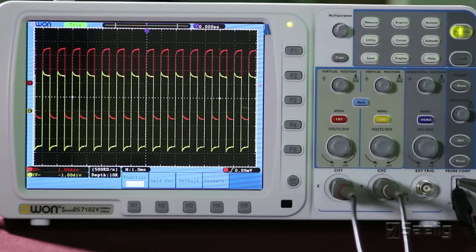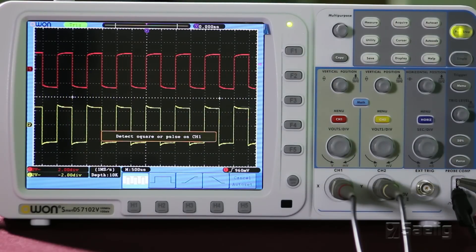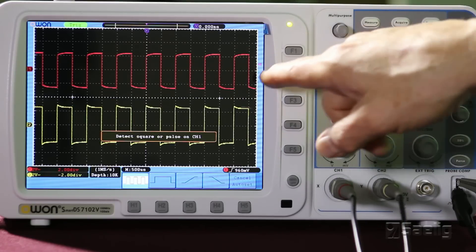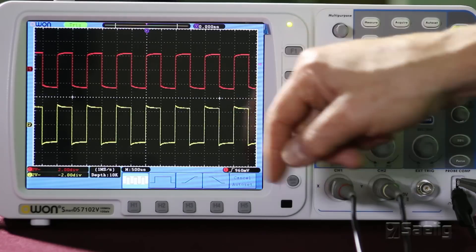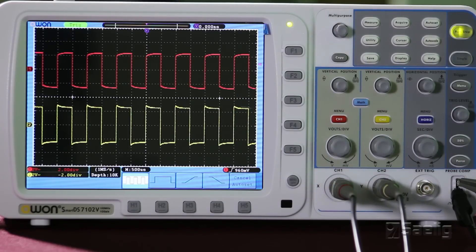You can hit the auto set button and get a nicer display than that. Here it is here. When you're looking at these, of course, pay attention to the frequency that the scope is showing and also the peak to peak level of the square wave right there. Because if there's something wrong, the square wave may have the right shape, but it may not be the right amplitude or something else may be wrong with it.